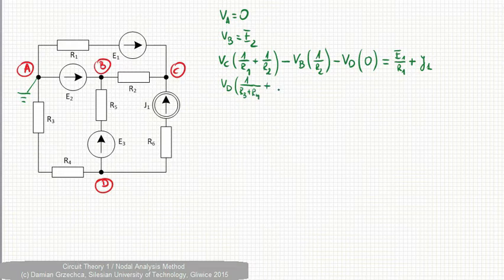so R3 plus R4. Between node B and D, there is a voltage source. Its internal resistance is zero, so it's 1 over R5. The right hand side branch between C and D, it is plus 1 over infinity, so it's zero,